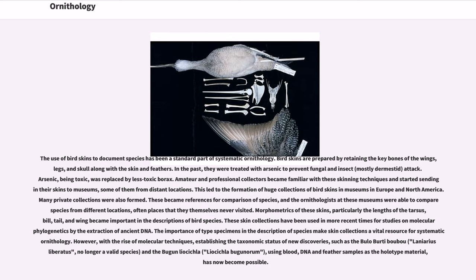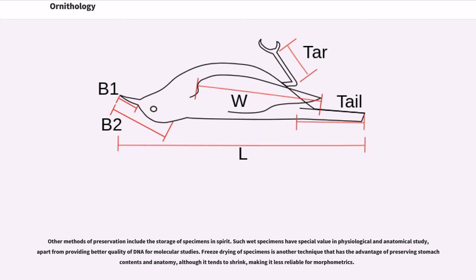The importance of type specimens makes skin collections a vital resource for systematic ornithology. However, with the rise of molecular techniques, establishing the taxonomic status of new discoveries using blood, DNA, and feather samples as holotype material has now become possible. Other methods of preservation include the storage of specimens in spirit; such wet specimens have special value in physiological and anatomical study, apart from providing better quality DNA for molecular studies. Freeze-drying of specimens is another technique that preserves stomach contents and anatomy, although it tends to cause shrinkage, making it less reliable for morphometrics.